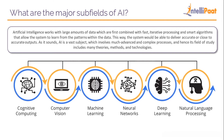In deep learning, a large amount of data is analyzed and the algorithm performs tasks repeatedly, each time adjusting a little to improve the outcome. Finally, natural language processing means developing methods that help us communicate with machines using natural human languages like English, Chinese, Hindi, and Spanish. We are defining a way for humans to interact with machines using our own language to make it easier for us.